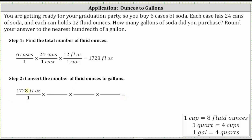Let's first convert fluid ounces to cups using the conversion one cup equals eight fluid ounces. We multiply by the unit fraction of one cup over eight fluid ounces so that fluid ounces appear in the numerator and denominator, and fluid ounces simplify out. Next, we convert cups to quarts by multiplying by the unit fraction of one quart over four cups — cups simplify out, leaving us with quarts. Finally, we convert quarts to gallons by multiplying by the unit fraction of one gallon over four quarts — quarts simplify out, leaving us with gallons.